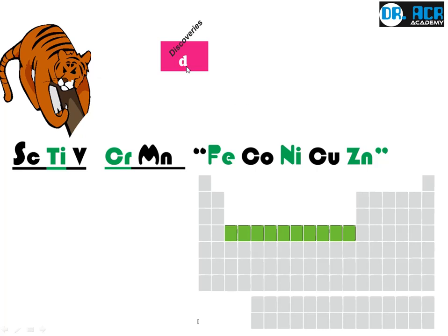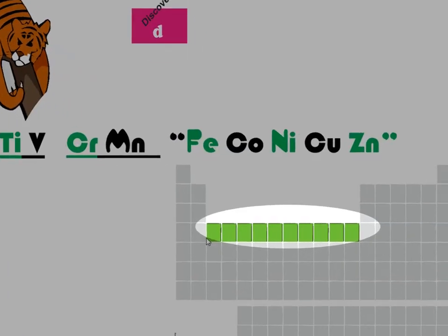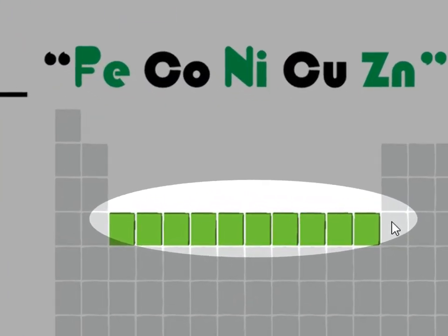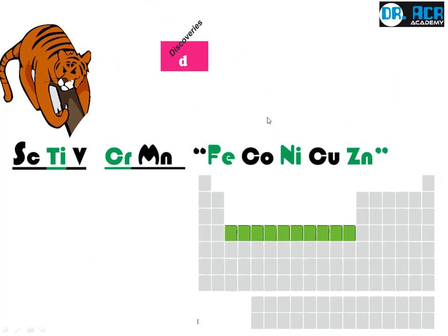Now we come to the D block. To easily remember the D block elements, we need to know the first elements of the groups. After hearing the scary tiger voice, a creative man shouted: Fekko, Niko, Jink! Scary tiger voice — creative man shouted — Fekko, Niko, Jink!